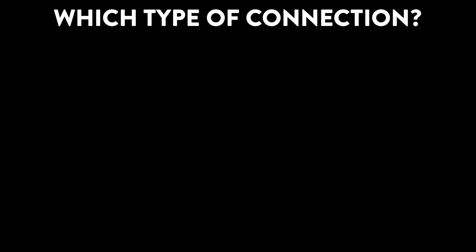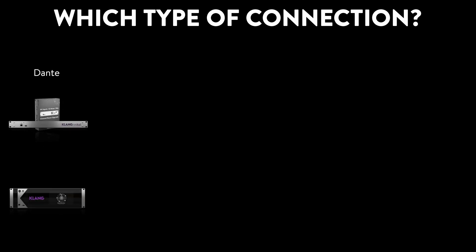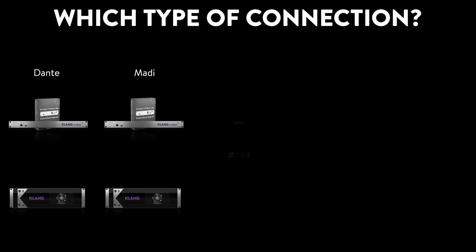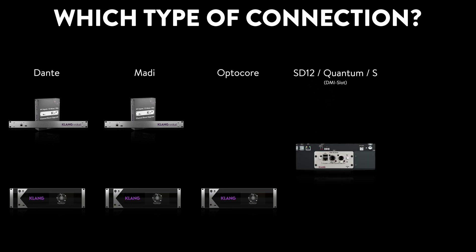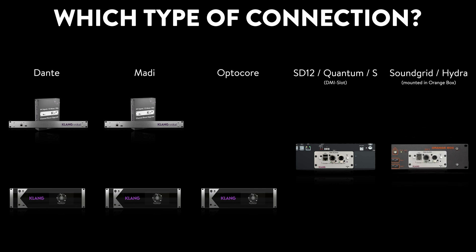Do you want to connect our processors with the Dante environment? Then both Clang Vocal and Clang Conductor will natively connect. Same goes for MADI. OptoCore is only available on Clang Conductor. In case you are working with a DiGiCo SD12, Quantum or S-Series console, you can directly install DMI Clang. That said, mounting a DMI Clang into a DiGiCo Orange box will give you even more options, like Dante, MADI, OptoCore, SoundGrid and many more.